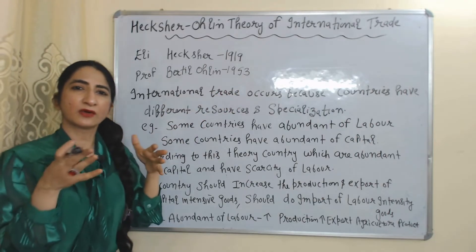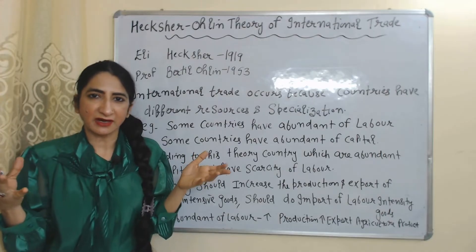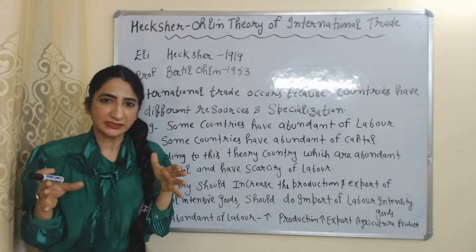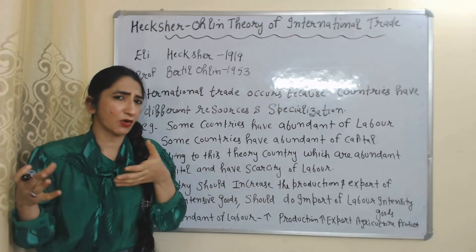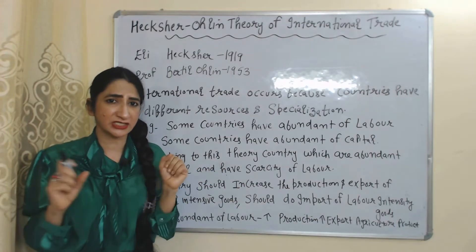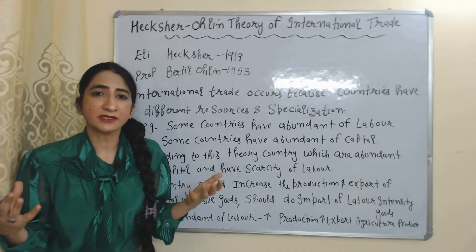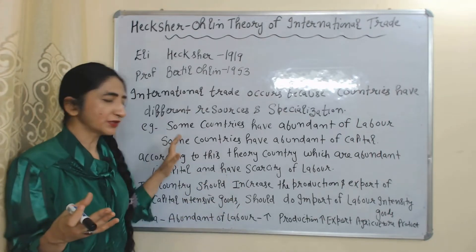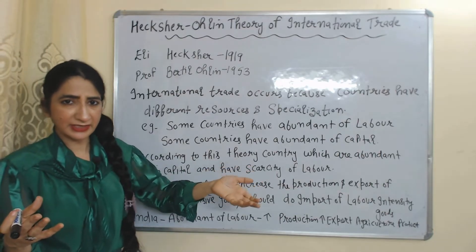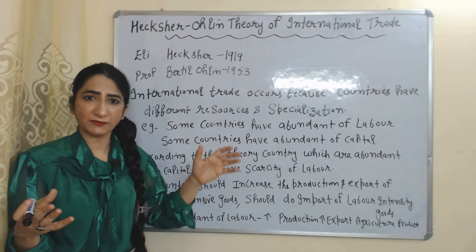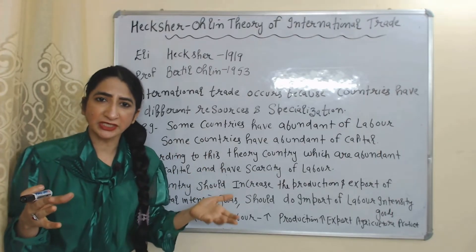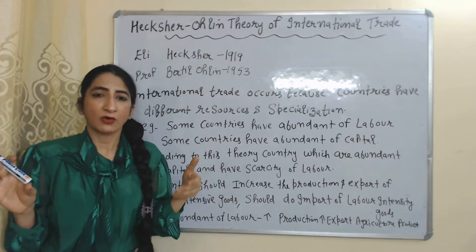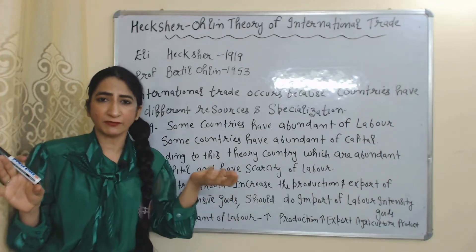According to this theory, international trade occurs because countries have different specialization and resources. For example, some countries are abundant in labor, while other countries are abundant in capital. Countries that are abundant in capital and have a scarcity of labor should increase the production and export of capital-intensive goods.